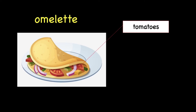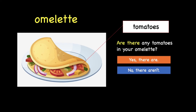We have tomatoes. Tomatoes are actually countable nouns, which means you can count one tomato, two tomatoes, three tomatoes. So, if we can count them, we use: "Are there any tomatoes in your omelette?" Because there is more than one tomato, we say: "Are there any tomatoes in your omelette?" If there are, you can say: "Yes, there are." If not, you say: "No, there aren't."